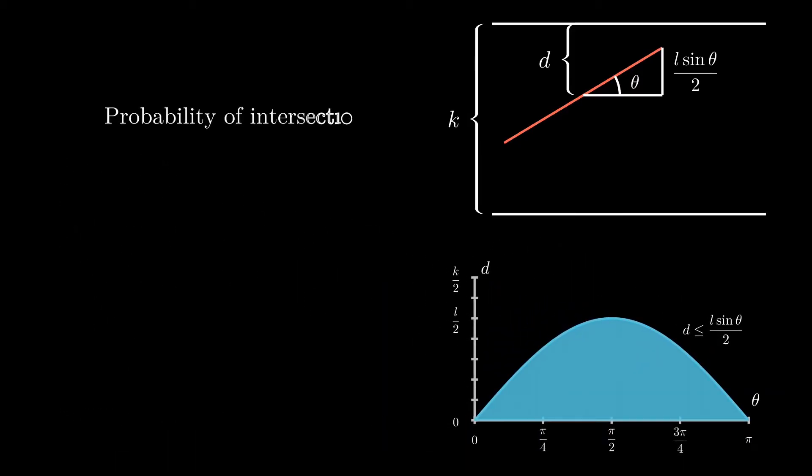Now, to find the probability p of a given needle intersecting a line, we need to divide the desired area, the area of intersecting scenarios, by the total area, the area of all scenarios.